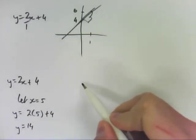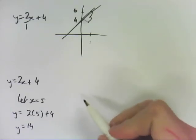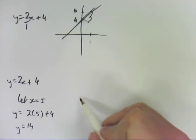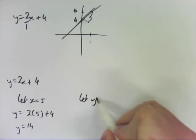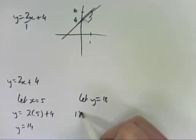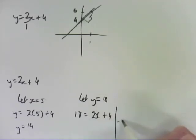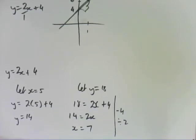Another thing it might ask you is what does x equal when y is, let's go for 18. So we let y equal 18, so 18 equals 2x plus 4, and then you do your rearranging. 14 equals 2x, x equals 7.